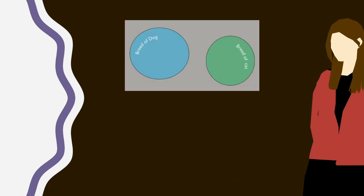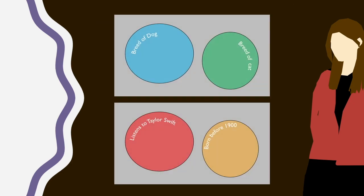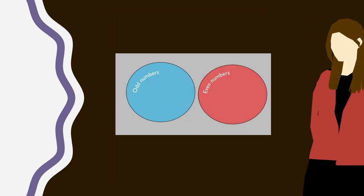If two sets have no overlap, they are said to be disjoint or mutually exclusive, which is usually represented as separate circles.